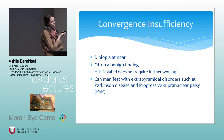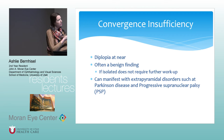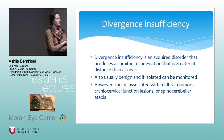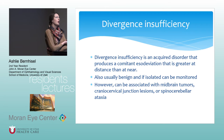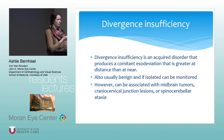Convergence insufficiency usually causes diplopia at near. It's usually a benign finding and does not require further workup, but it can manifest with extrapyramidal disorders such as Parkinson's or PSP. Divergence insufficiency is acquired and produces a comitant esodeviation greater at distance than near. It's also benign if found in isolation, but is usually associated with other neurological symptoms if associated with a midbrain tumor or spinocerebellar ataxia.